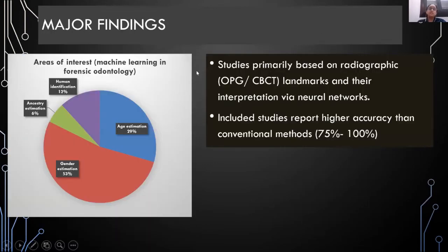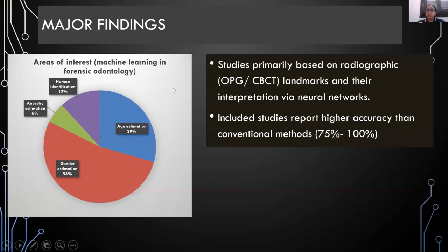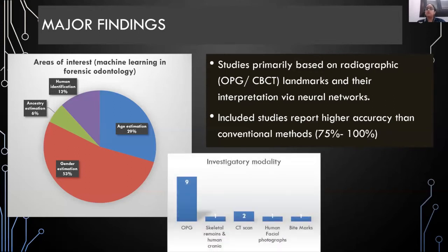Our major findings included identification of the main areas in which machine learning had been applied in forensic odontology: 53 percent of studies applied machine learning for gender estimation, 29 percent for age estimation, 12 percent for human identification, and 6 percent for ancestry estimation. These studies were primarily based on identification of radiographic landmarks via OPG or CBCT images and their interpretation via neural networks.